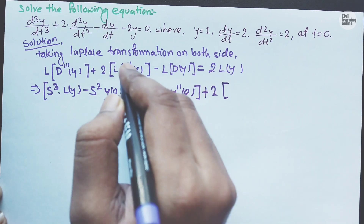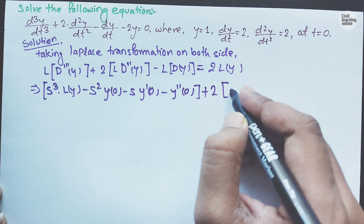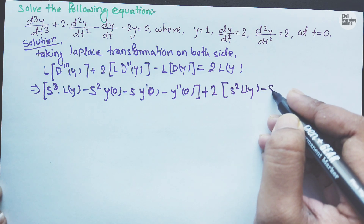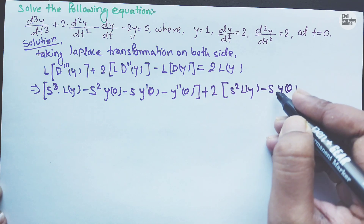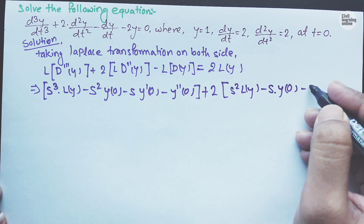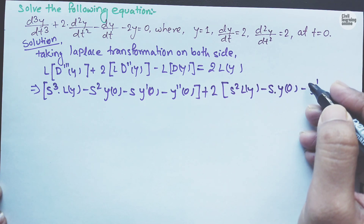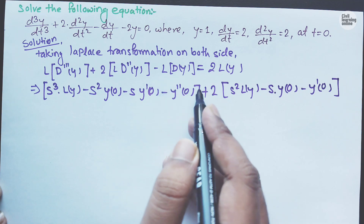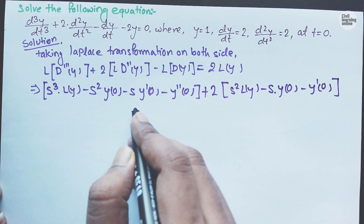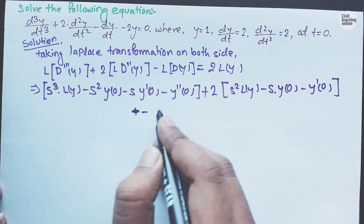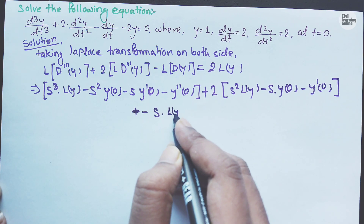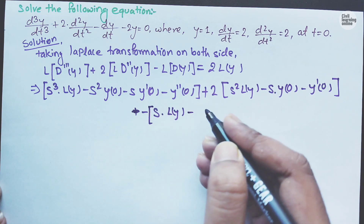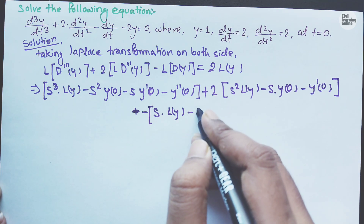For the second derivative term: plus 2 times [s squared times L{y}, minus s times y(0), minus y dash(0)]. For the first derivative term: minus [s times L{y} minus y(0)]. And we have minus 2 times L{y} equals zero.